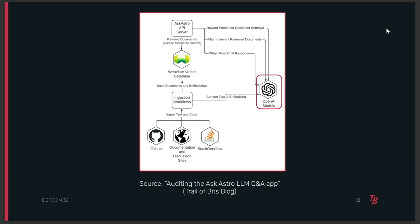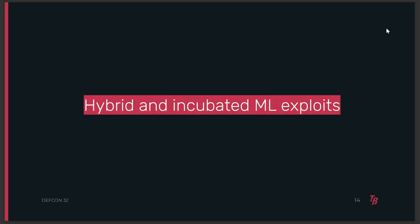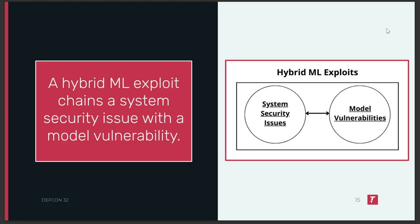There's a large and evolving landscape of tools being used in and for ML systems, and that brings me to the exploit framework. The title of my talk references an incubated ML exploit, but there's a larger category called hybrid ML exploits that are important to think about first. Specifically, a hybrid ML exploit chains a system security issue with a model vulnerability. This can go in either direction — you can have a model vulnerability that exposes a system security issue, or you could use a system security issue to exploit a model vulnerability.